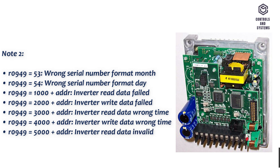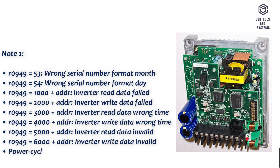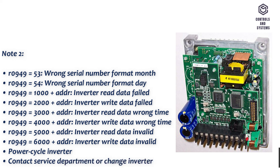R0949 equals 4000 plus address: inverter write data wrong time. R0949 equals 5000 plus address: inverter read data invalid. R0949 equals 6000 plus address: inverter write data invalid. Power cycle the inverter. Contact the service department or change the inverter.